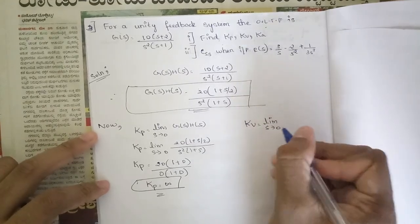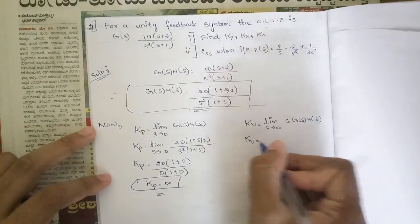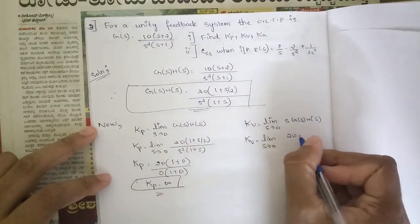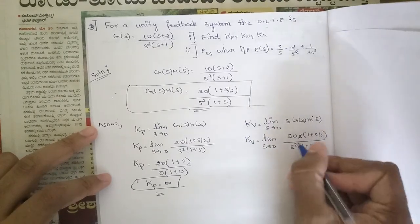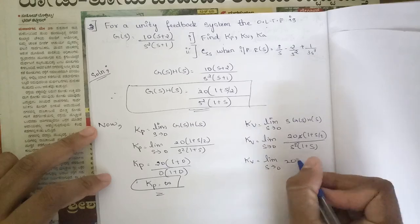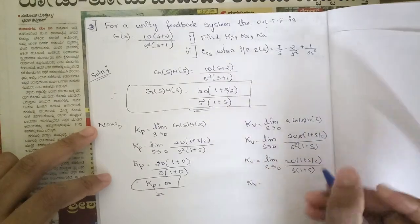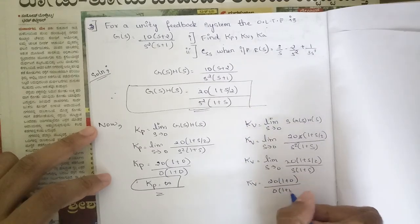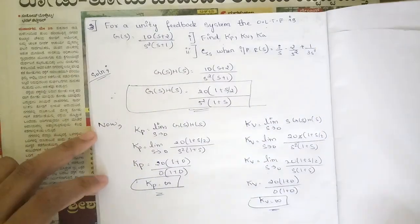Finding Kv: the formula is Kv = lim(s→0) s·G(s)H(s). So Kv = lim(s→0) 20s·(1 + s/2) / [s²·(1 + s)]. One factor of s cancels, giving lim(s→0) 20·(1 + s/2) / [s·(1 + s)]. Applying the limit gives 20/0, which is infinity. Therefore Kv = ∞.